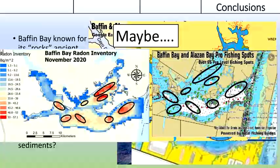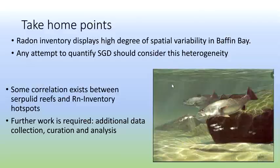The take-home points here are that we do see a high degree of spatial variability in the radon inventory across Baffin Bay, and this should be taken into consideration if you're ever going to do any SGD estimations. We're also looking a little bit closer into Serpolid reefs and radon inventory, but some more work shall be done.